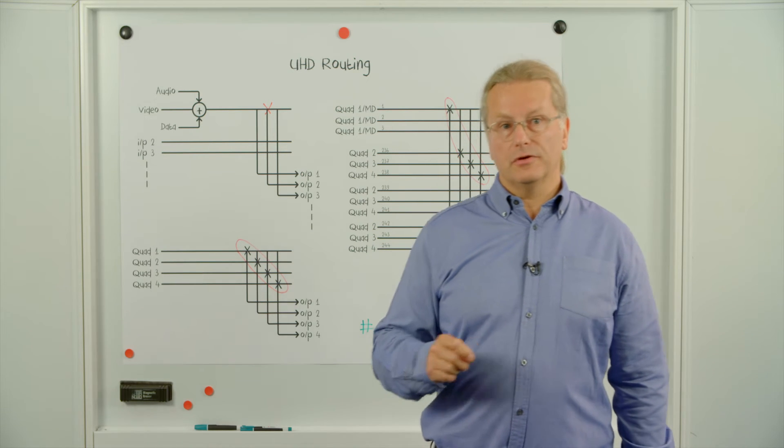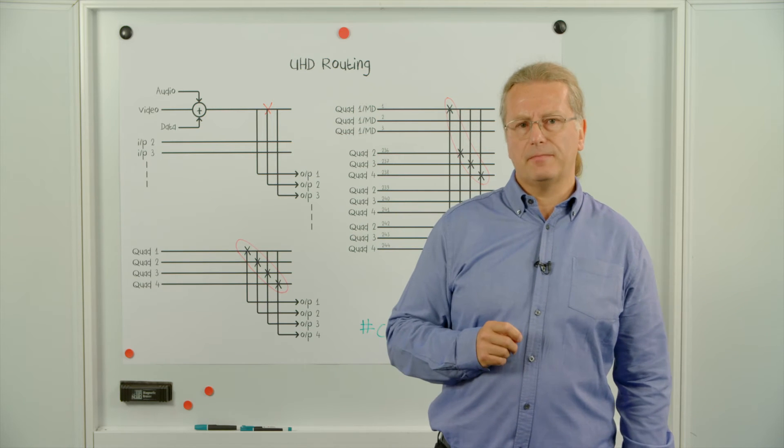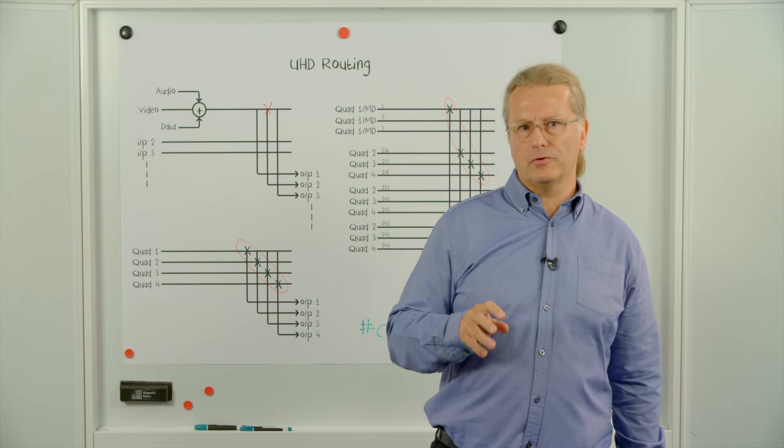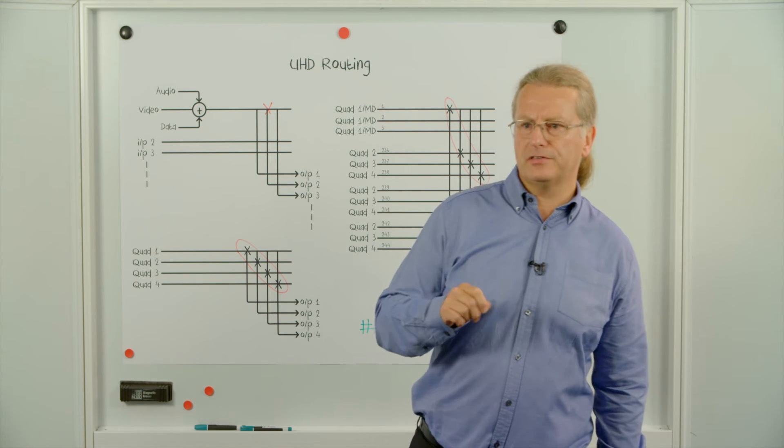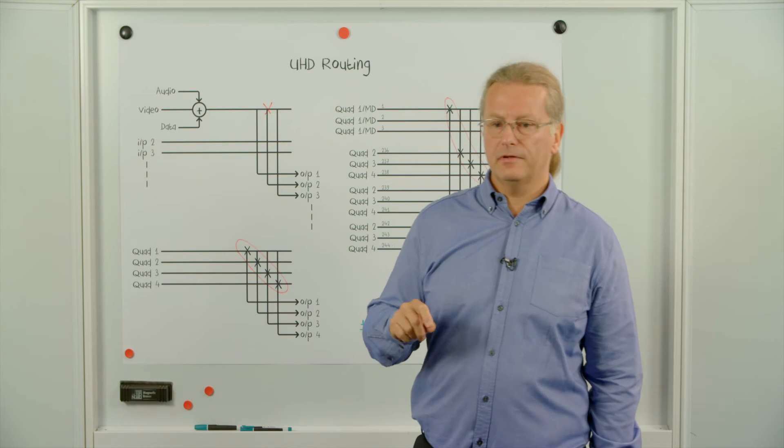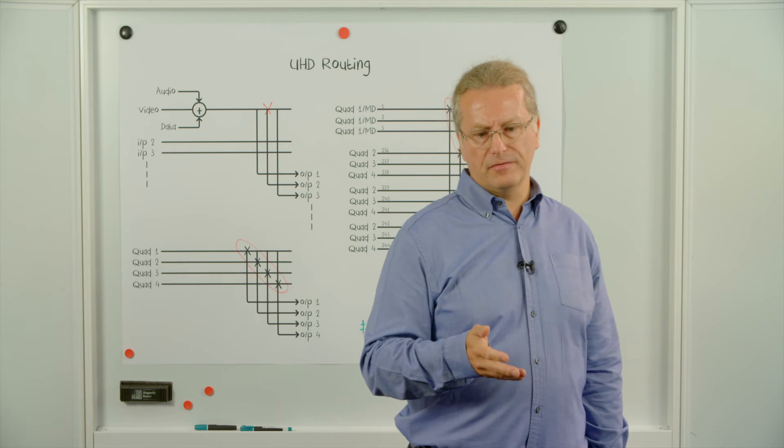What the router control system should also do is make sure that all four routes have been made. So when it receives the tally back from the router, it should compare it to what it sent. And if all four routes haven't been made, it should allow the operator to either resend that command, or perhaps it should do it itself, or perhaps even it should allow the operator to switch back to the previous source.